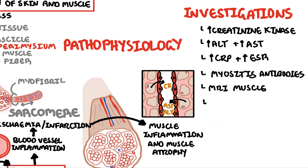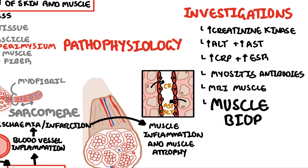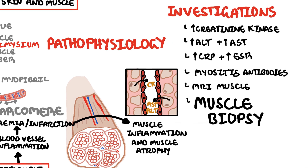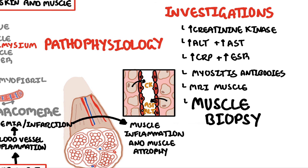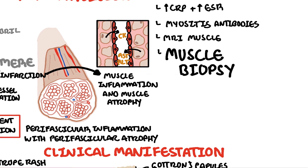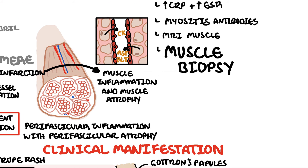An MRI of the muscle is important, and most specifically a muscle biopsy, which is the gold standard for diagnosing and differentiating the different types. Muscle biopsy will show perifascicular inflammation and atrophy. A skin biopsy can also be performed to confirm features of dermatomyositis.